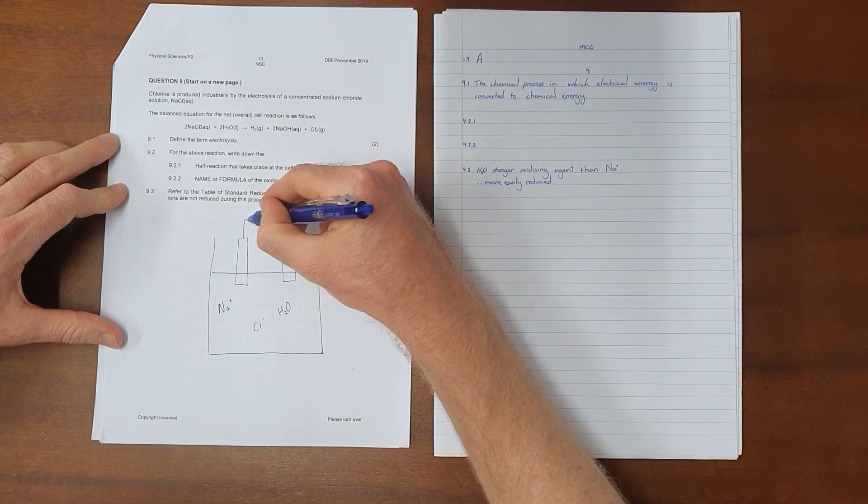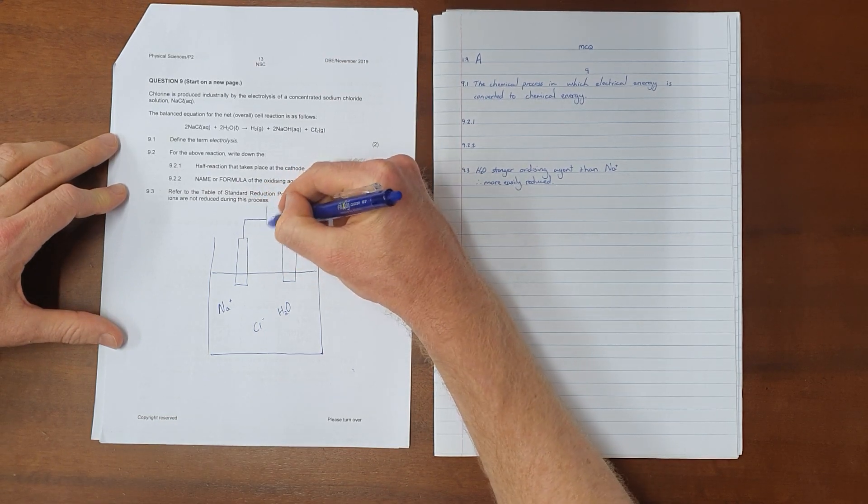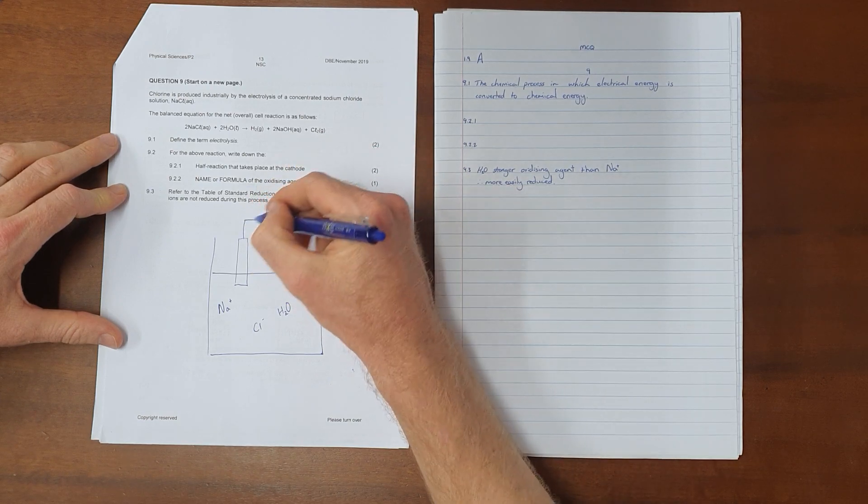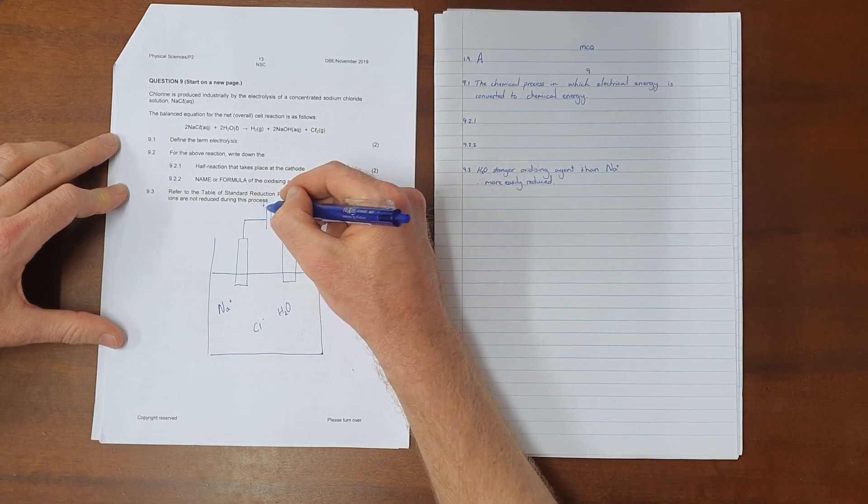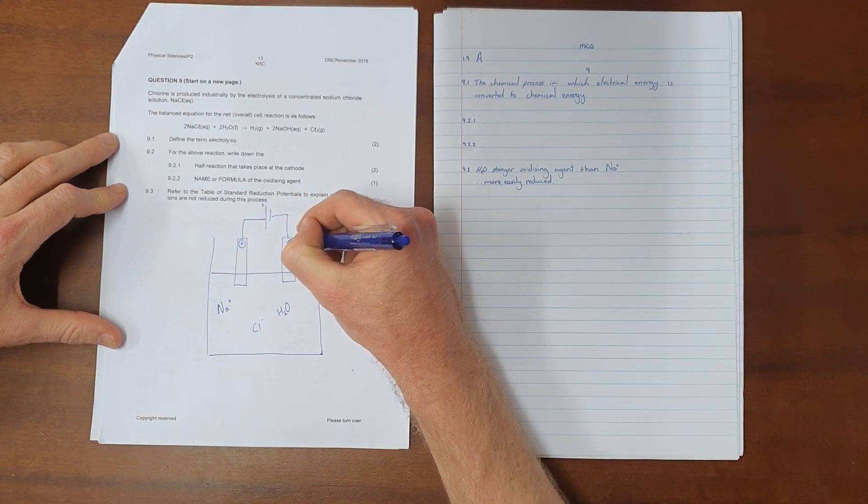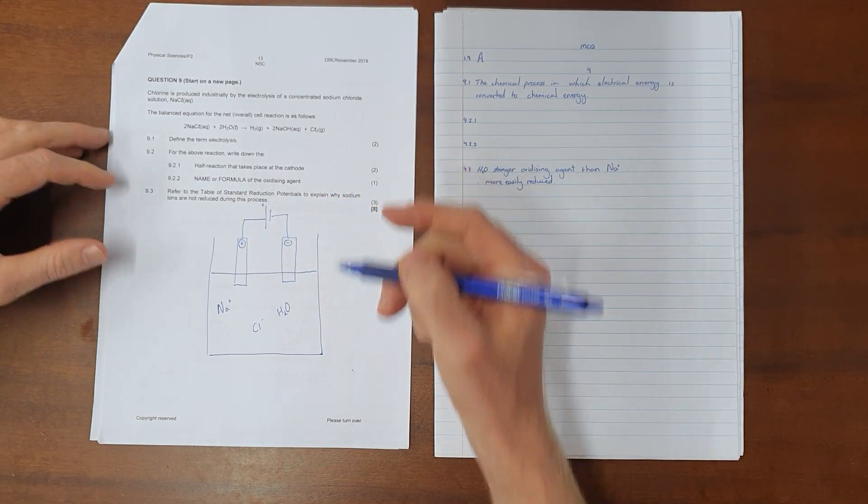Those electrodes are connected to a cell or a battery, and we know that the positive terminal of the battery is the longer one, which makes this our positive electrode, and this the negative electrode.